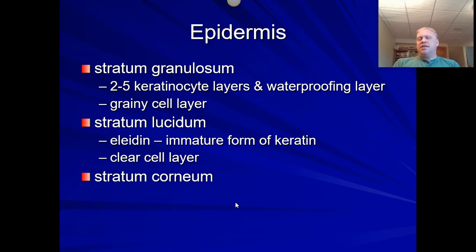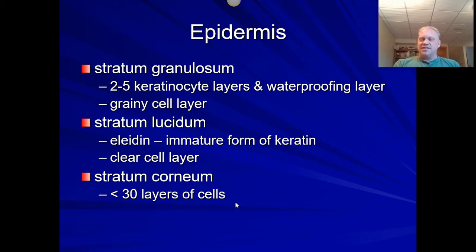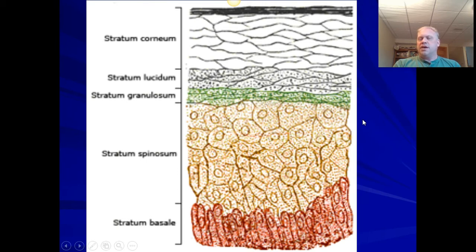The topmost layer is called the stratum corneum — which unfortunately translates to 'horny' — because the cells curl up as they dry, looking like little horns. Usually we have fewer than 30 layers of cells, though it might be thicker where we get calluses. It's there for abrasion resistance; it grabs onto things and exfoliates or desquamates. Up at the stratum corneum, the nucleus is dead — it's just there for protection and is meant to slough off. Above that is the waterproofing keratin. Recall from the tissues chapter: stratified squamous epithelium is either keratinized or not — this is where that waterproofing occurs.